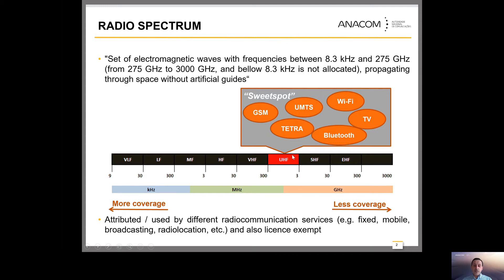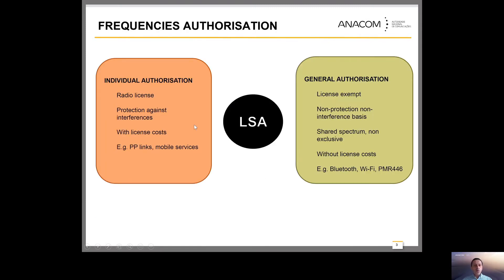That is why the spectrum sometimes is not enough for all the requests we can have. The question is how can we have more spectrum sharing in these more interesting frequency bands. When we have exclusive spectrum we need an individual authorization, where we can grant a radio license and uses are protected against interference. They have costs, but they have the spectrum for their own exclusively.